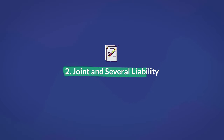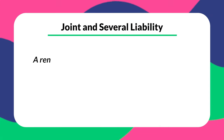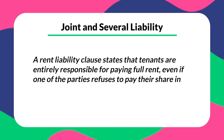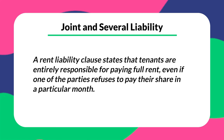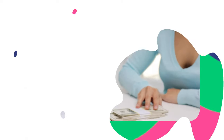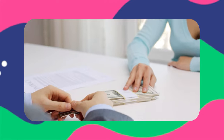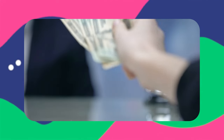Number two is joint and several liability. This is another important clause to ensure you get paid when you have to. A rent liability clause states that tenants are entirely responsible for paying full rent even if one party refuses to pay their share in a particular month. For example, if a tenant is going to live with roommates, it's important that you hold that specific tenant liable for rent and possible damages. This way, if one roommate doesn't pay their share, the other tenants still need to pay the missing amount. In essence, all tenants need to pay rent equally, but it's better to make sure you always get paid in full.